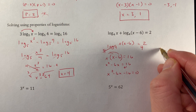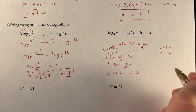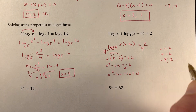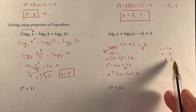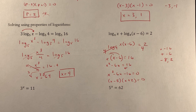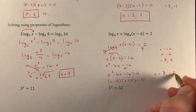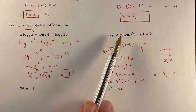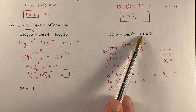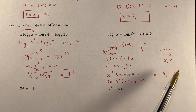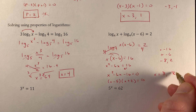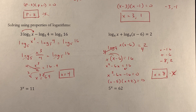Now I factor: I need two numbers that multiply to negative 16 and add to negative 6 — those are negative 8 and positive 2. Negative 8 times 2 is negative 16, and negative 8 plus 2 is negative 6. So the factored form is (x minus 8)(x plus 2) equals 0, giving two solutions: x equals 8 and x equals negative 2. Using x equals 8 gives a positive argument of 8 and then 8 minus 6 equals 2, also positive — that works. Using x equals negative 2 gives a negative argument, so that solution must be thrown out. Therefore x equals 8 is the only valid solution.